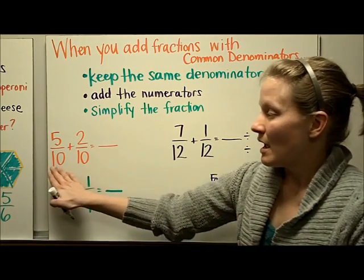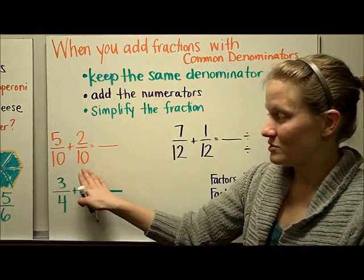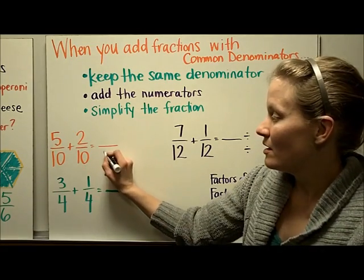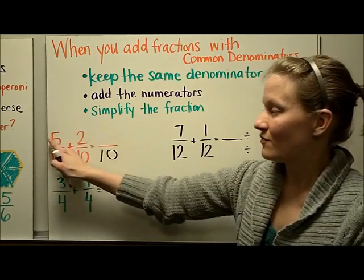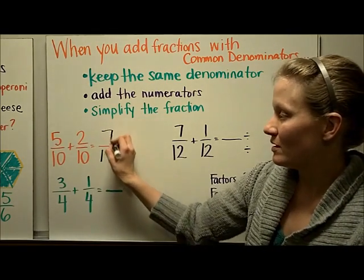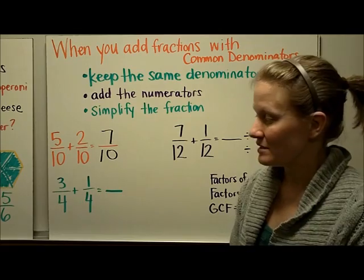So let's do a couple examples. I have 5/10 plus 2/10. I want to make sure that I keep the same denominator, which will be 10, and then I will just add the numerators. 5 plus 2 is 7. 5/10 plus 2/10 is 7/10.